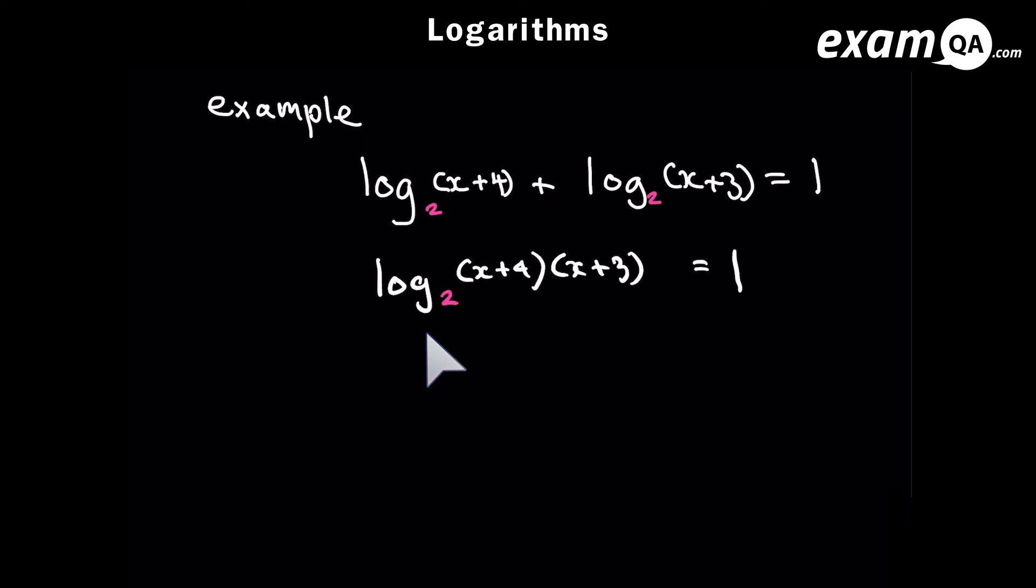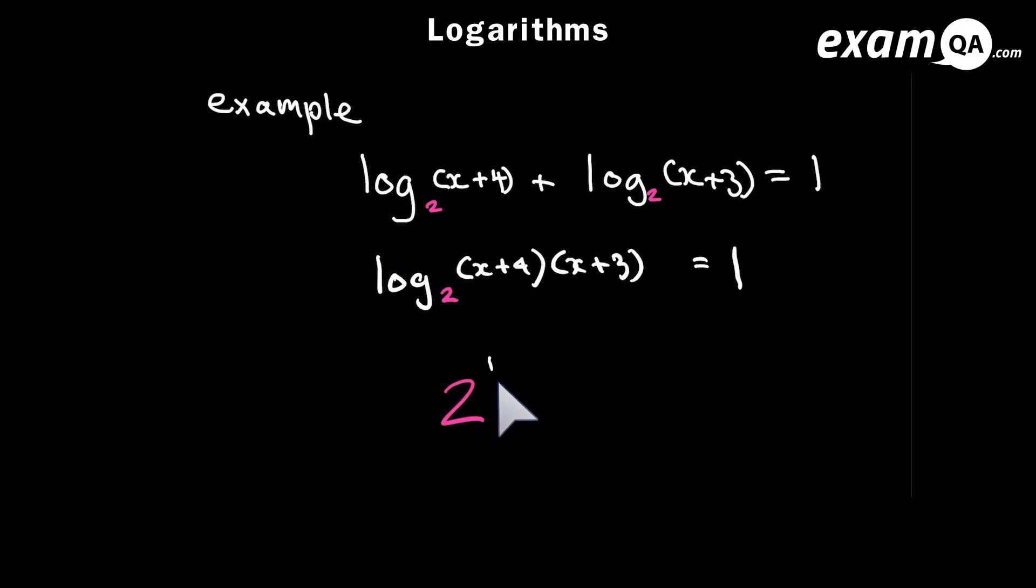So here we've used the addition rule. Now usually when you're solving equations involving logs, what you want to do is try to get it in a single log form. So the question had two logs involved and you can see by using the addition rule we've managed to put it into a single log. Once you've done that, you just want to take it out of log form. So the base is 2 and the power is 1, and all of that equals to (x + 4)(x + 3). And now you can tidy that up and you get yourself a simple quadratic to solve. And we have x equals minus 2 and x equals minus 5.